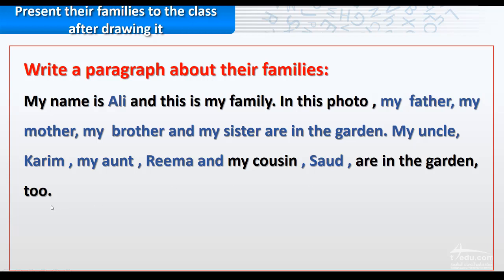Remember: when you list things, you use a comma between each item, but before the last one, instead of using a comma, we use 'and.' For example: my father, my mother, my brother, and my sister are in the garden.